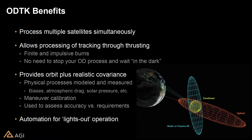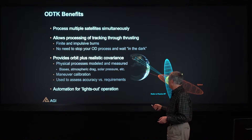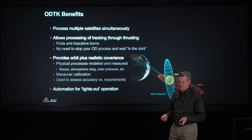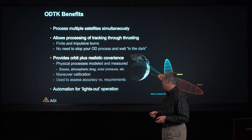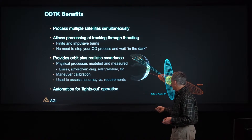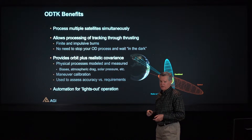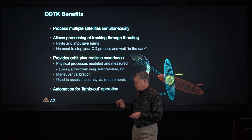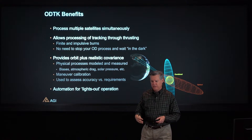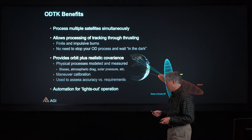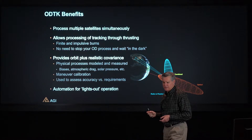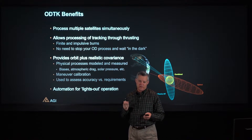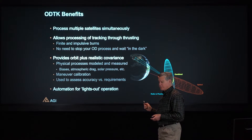Some of the benefits of ODTK are the ability to process multiple satellites simultaneously — hence the point of this talk — and also the ability to process through thrusting intervals, which is important for formations of satellites because you do a lot of formation maintenance when satellites are nearby one another. The ability to produce realistic covariance is also extremely important, because many applications that benefit from simultaneous orbit determination are really motivated by the need for realistic covariance — as with the probability of collision computation mentioned earlier.